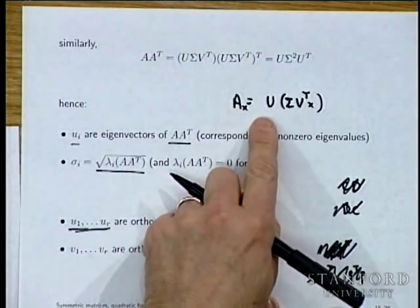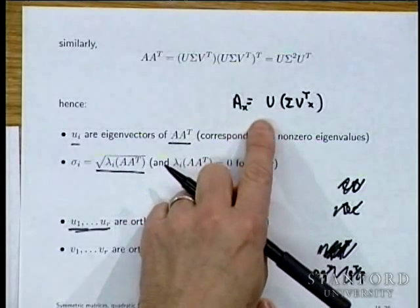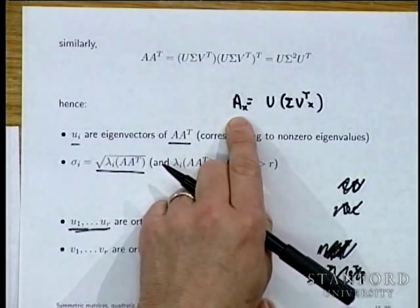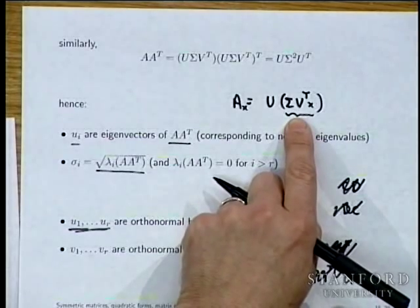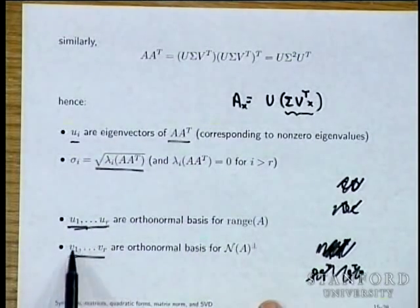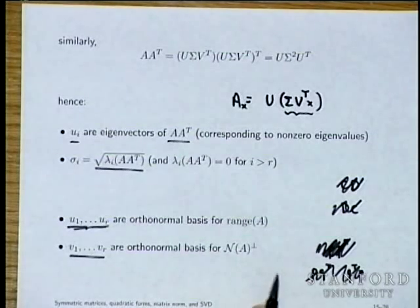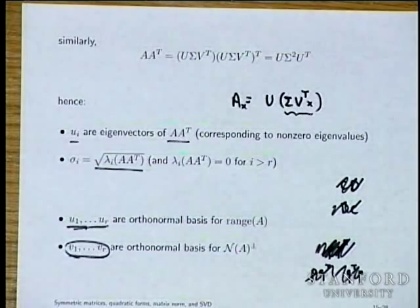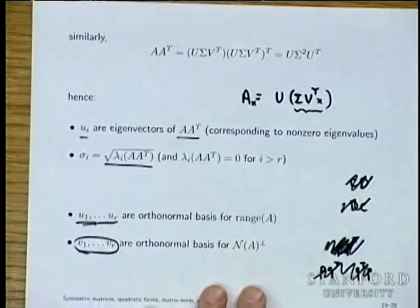Anything of the form Ax is a linear combination of the columns of U, so U₁ through U_R are an orthonormal basis for the range of A. V₁ through V_R are an orthonormal basis for the orthogonal complement of the null space of A — these are the input directions that are not in the null space. If you're orthogonal to V₁ through V_R, you're in the null space of A.